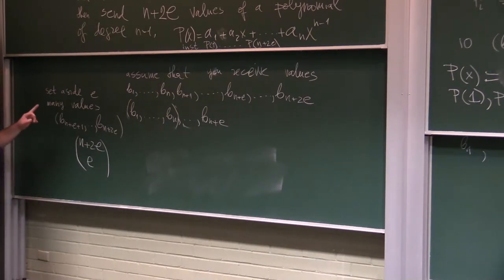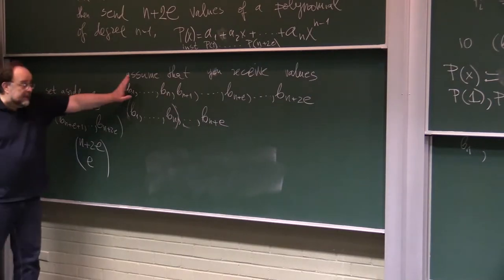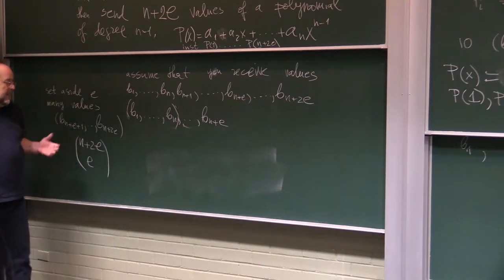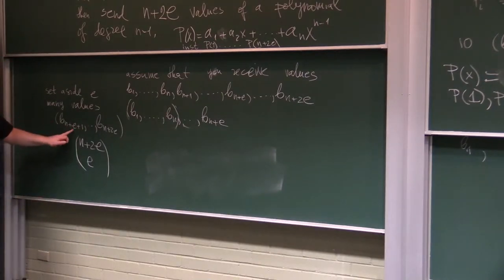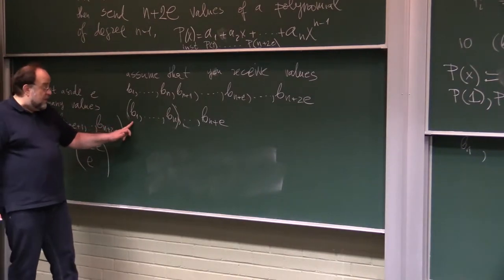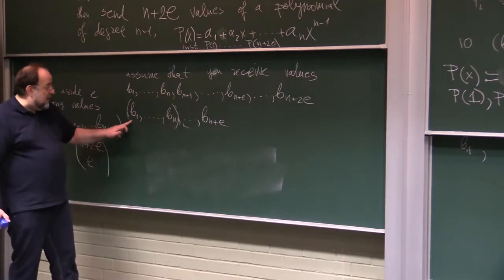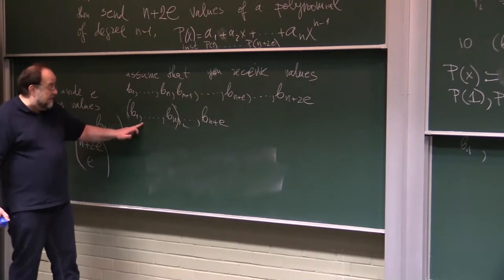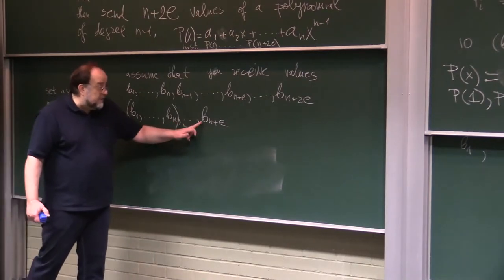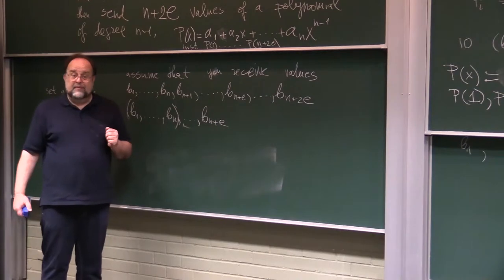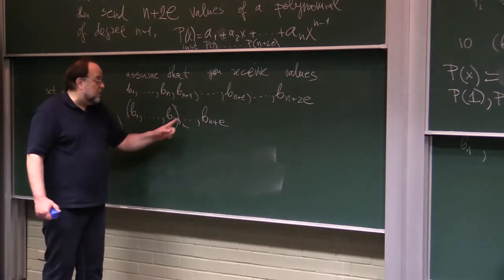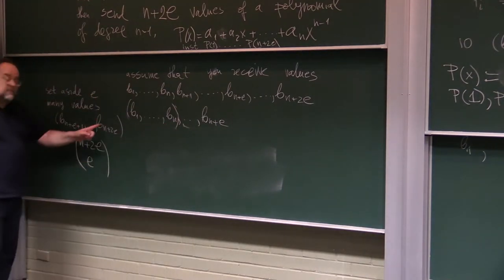The claim is, you can uniquely recover. How? If you isolate correctly the errors, the rest, when you construct a polynomial from n many values, the rest of the values will have to fit, because they are all correct values, you isolated the wrong values.